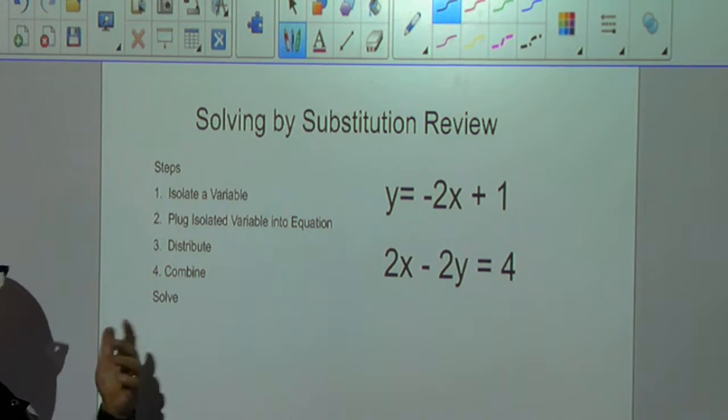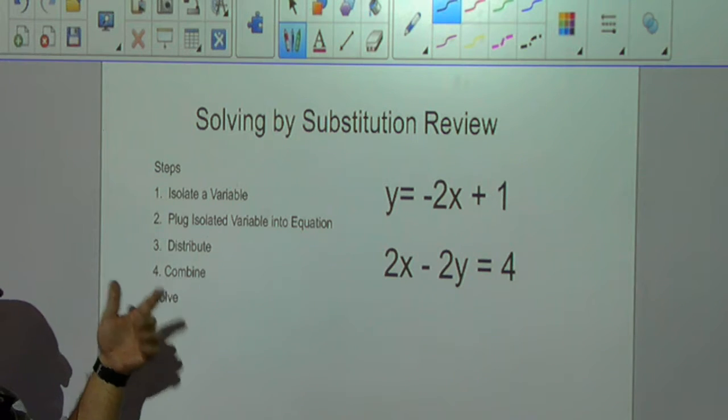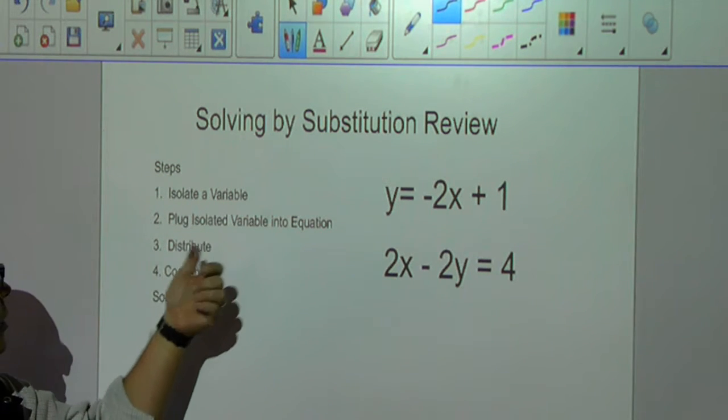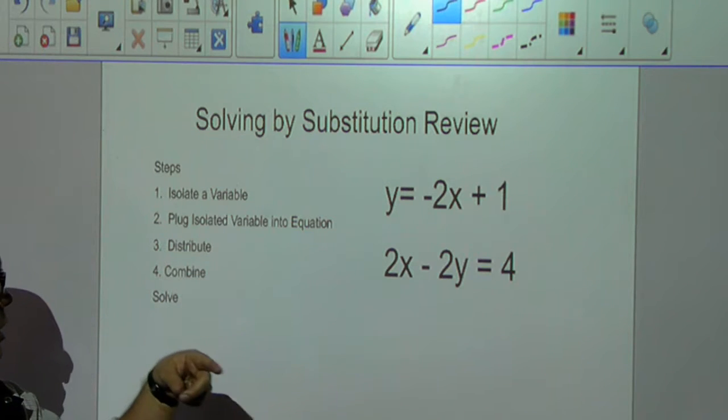What we've been talking about in class is when we solve by substitution we basically have a few steps we always follow. We need to isolate a variable, we need to plug that into the equation, distribute, combine, and then solve. It basically always follows that pattern.